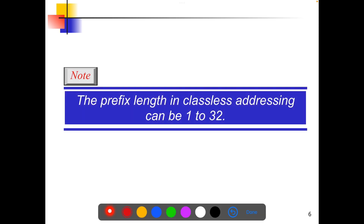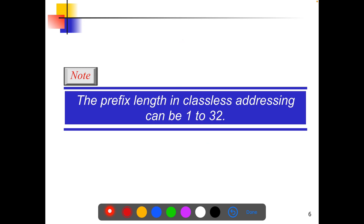The prefix length in classless addressing can range from 1 to 32. In classful addressing we had only 8, 16, and 24, but here we can have 1 to 32. If the prefix is 1, the suffix is 31; if the prefix is 2, the suffix is 30, and so on up to 32.